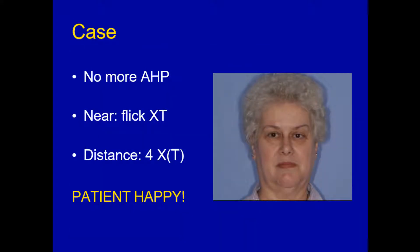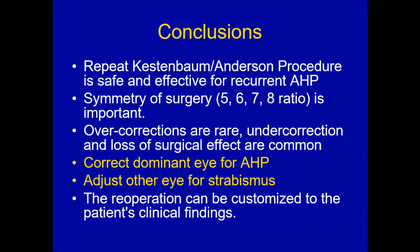Postoperatively, she has no more anomalous head posture. She has only a flick exotropia at near and a small intermittent exotropia at distance, and she is an extremely happy patient. This illustrates how to combine correction for strabismus with correction for a null point in the same surgery — a straightforward and effective way to think about it.